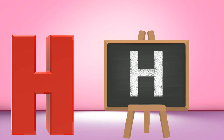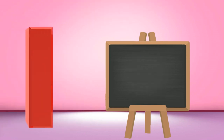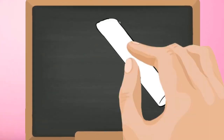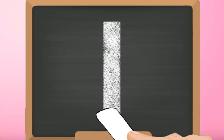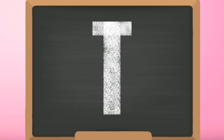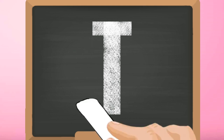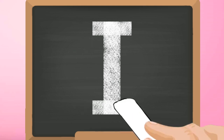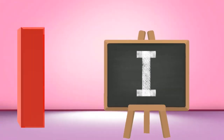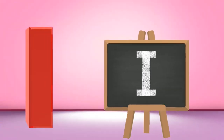I, capital I. Start from the top and make one standing line down. Then make two small straight lines, one at the top and another at the bottom. Capital I.